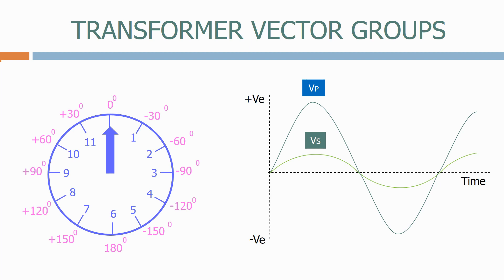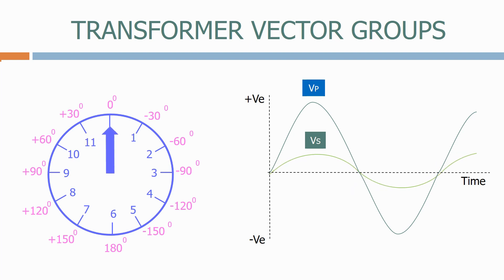Eleven o'clock will be plus 30 degrees. As we can see, the voltage on the secondary is now 30 degrees in advance of the voltage on the primary. Going the other way, one o'clock will be minus 30 degrees, which means that the voltage on the secondary winding is 30 degrees behind the voltage on the primary winding.